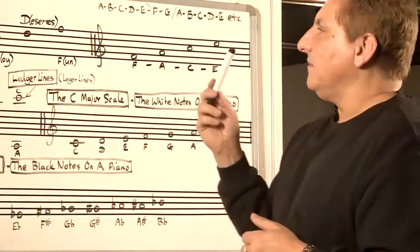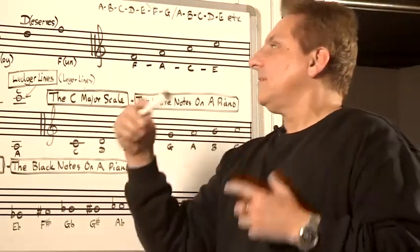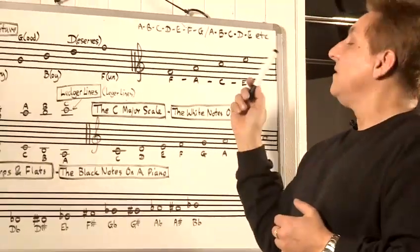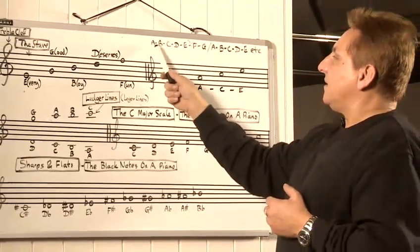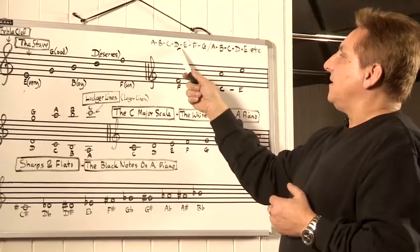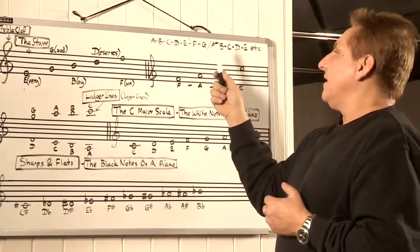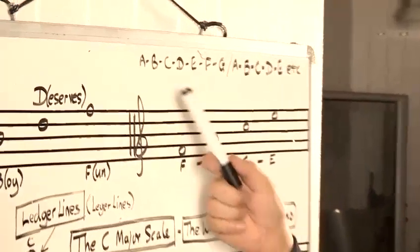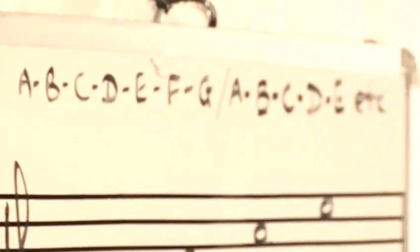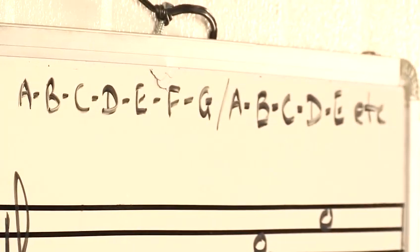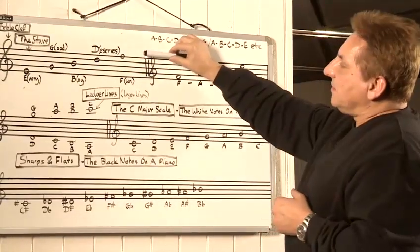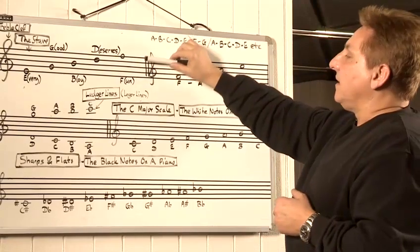Now the only letters which are used in music are A, B, C, D, E, F, G. It doesn't go any further in the alphabet — just those — and then it recurs again: A, B, C, D, E, F, G and so on. So that's the notes contained within the stave.